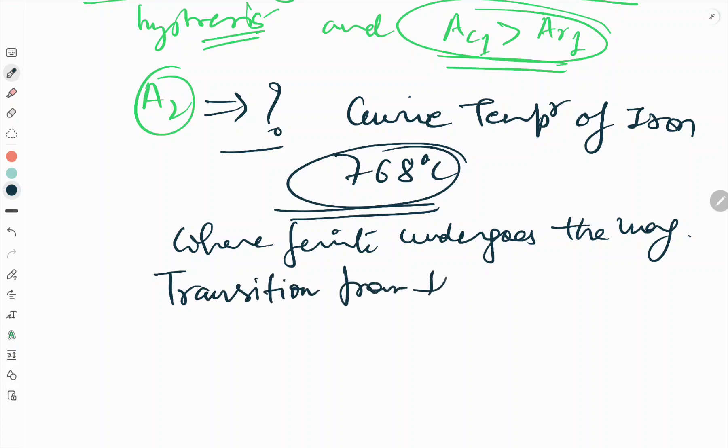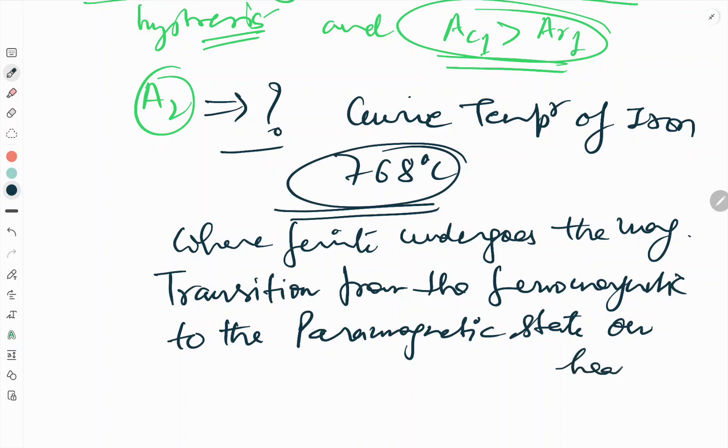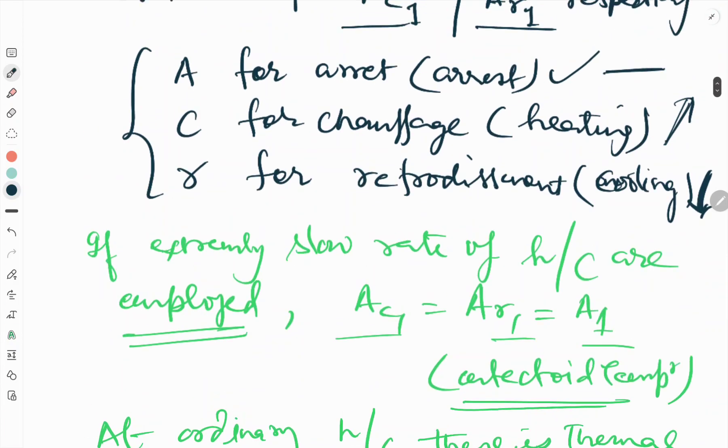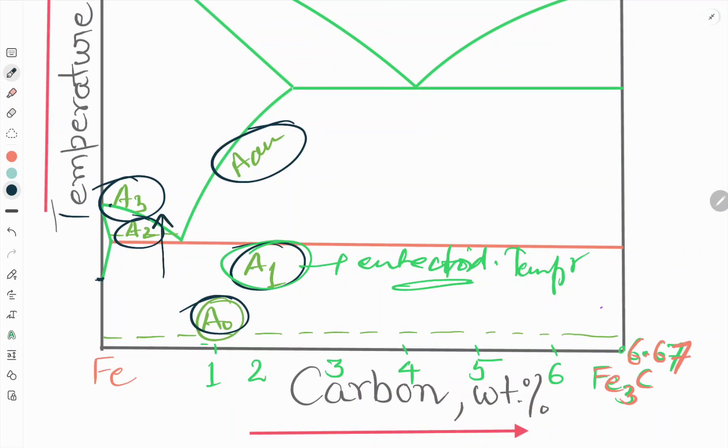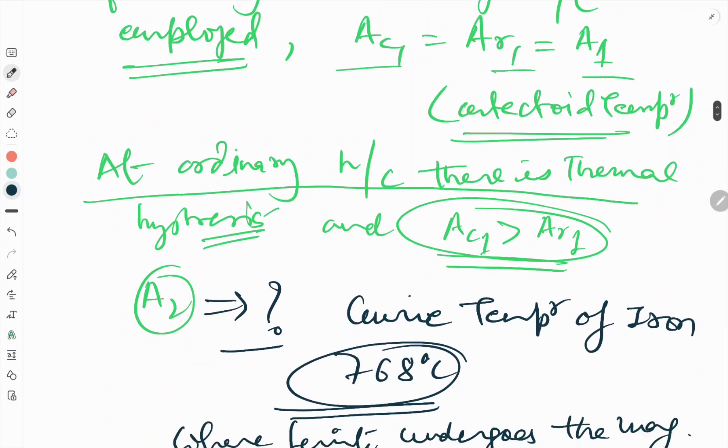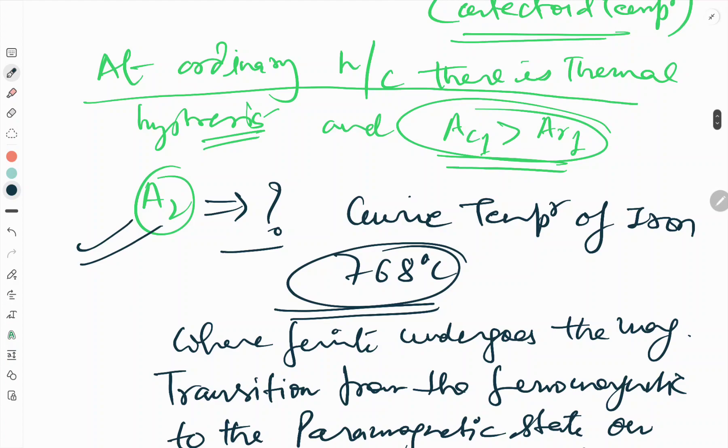From the ferromagnetic to the paramagnetic state on heating. Here we can see if we will heat, so this is the temperature range that is 768 degree centigrade temperature. Here the ferrite undergoes the magnetic transition, that is from ferromagnetic to paramagnetic. So we have seen what is A2 and what is A1 also.